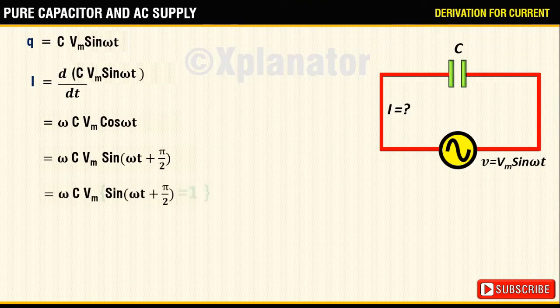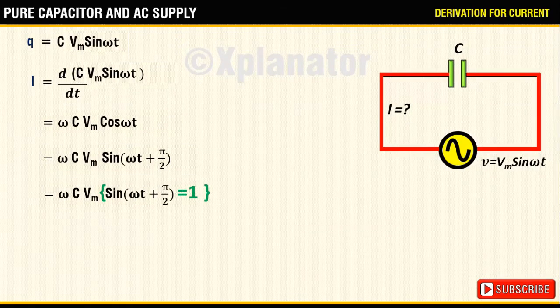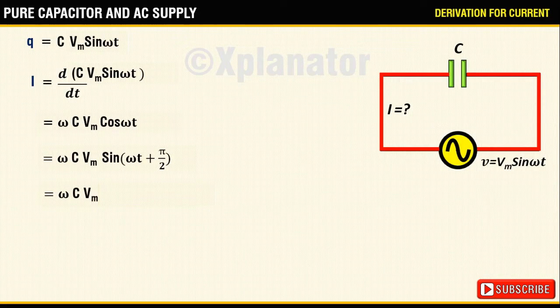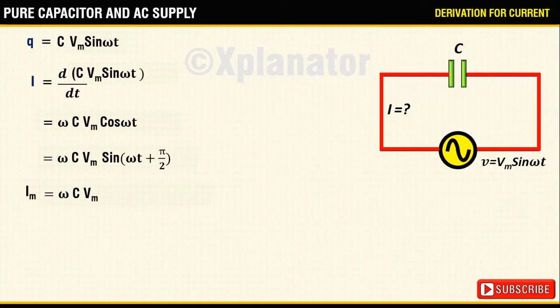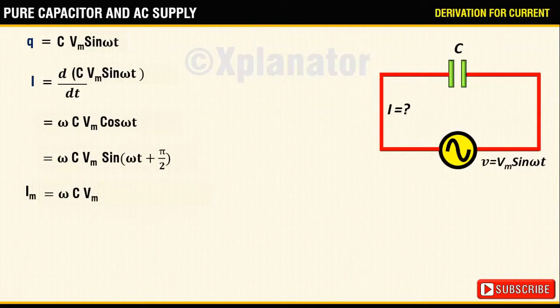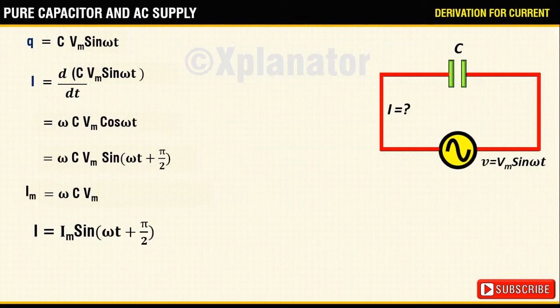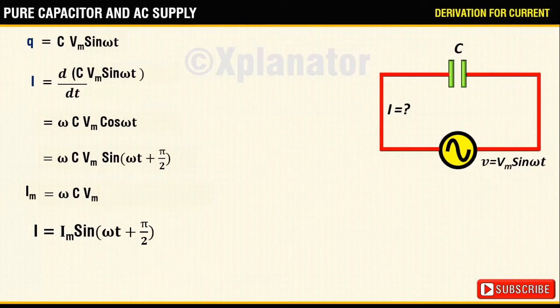When sine reaches its maximum value, current i will also reach its maximum value. So omega C into Vm can be denoted as Im. The equation for current can now be simplified to I equals Im sine of omega t plus pi by 2.